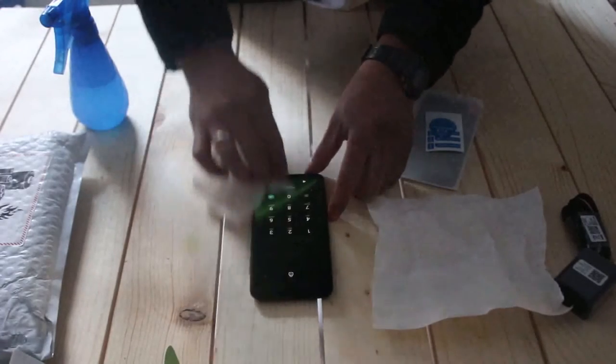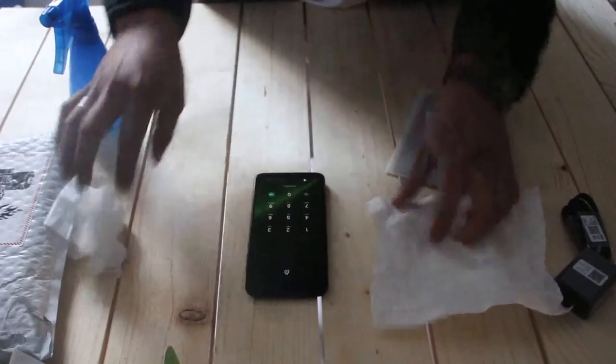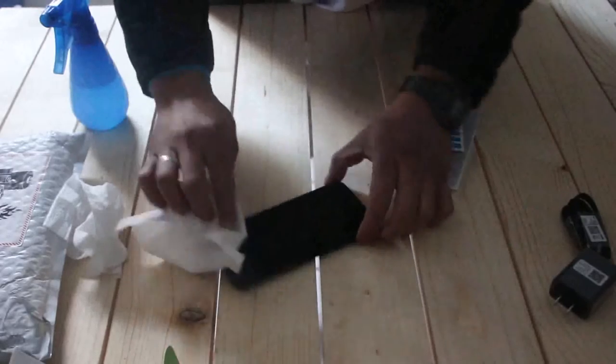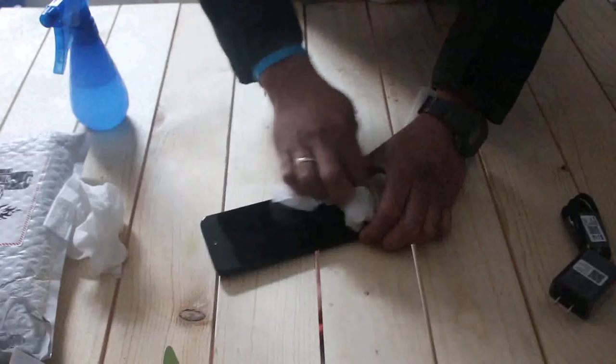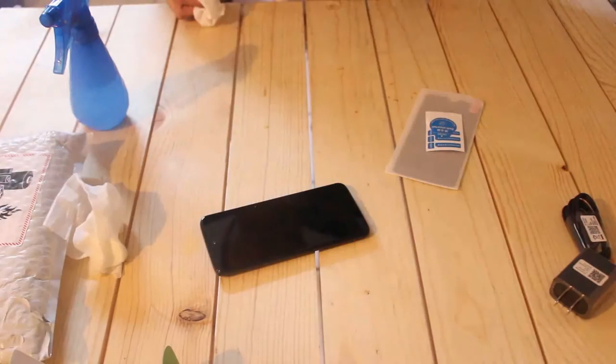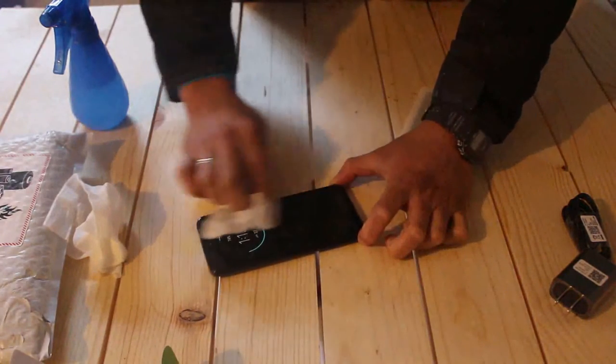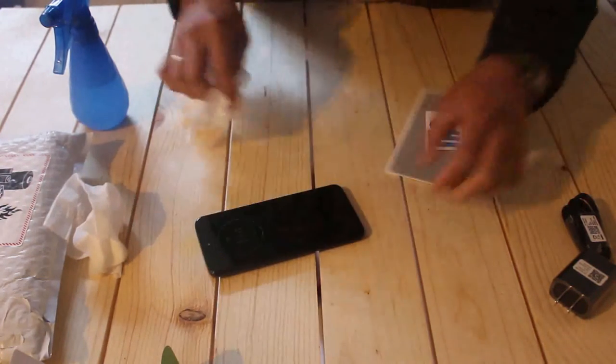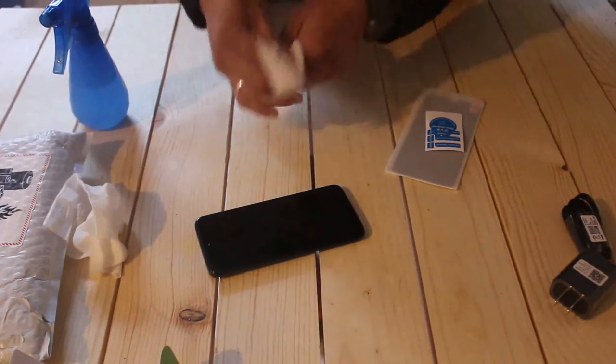The blue spray bottle that you see is alcohol. I use the alcohol first and spray it on the wet wipes, then I rub it onto the screen where I'm going to be applying my screen protector. After that, I dry it with the dry wipes.